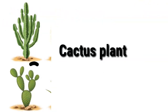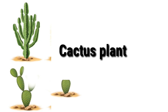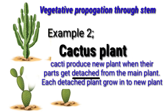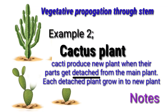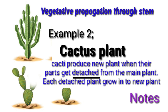For example, the cactus plant — when it grows, the stem can naturally fall and develop roots, and give rise to a new plant. Vegetative propagation will be completed by stem. There are more examples in your textbook: potato and ginger. If we look at a potato, it has eyes — those are actually buds.